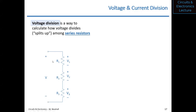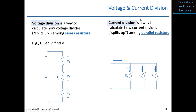Voltage division describes a way to calculate how voltage divides — or splits up — among resistors. How does the voltage across a series set of resistors split up into V1, V2, and V3? For example, given V, find V1 — voltage division tells you how to do that. For parallel resistors, we can apply current division, which calculates how current divides among parallel resistors. If you know a current IS going into the top of a parallel set of resistors, then find I1, I2, or I3.